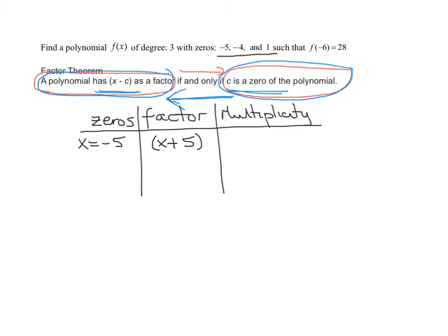My next zero is x equals negative 4. Its factor will be (x + 4). And the last one we're given is x equals 1, and its factor is going to be (x - 1).